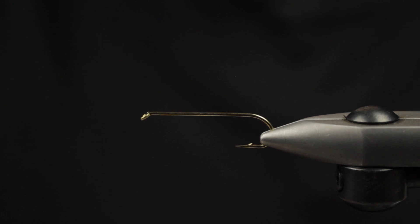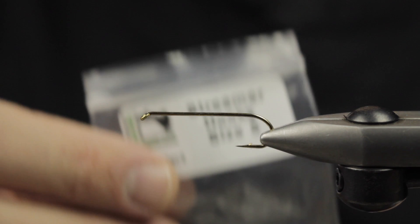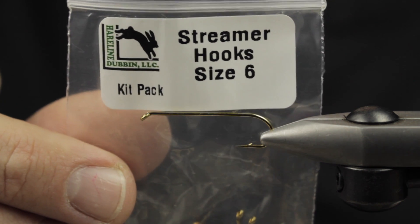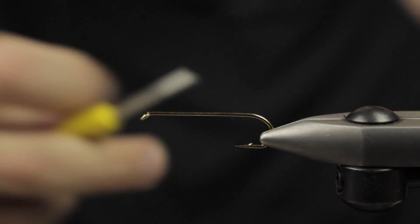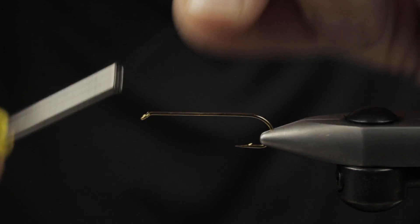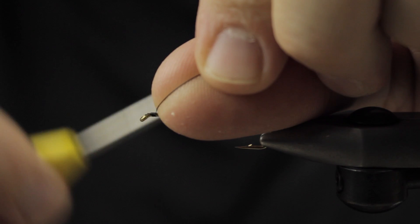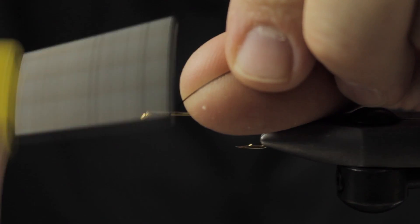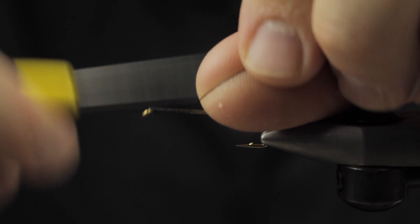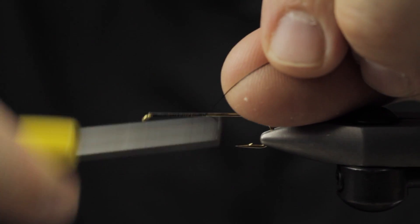Hey guys, Matt here from Loon Outdoors. Today we have a size 6 streamer hook in the vise and we're going to be tying a bucktail streamer. This is 8-0 thread in black. This is a really old-school streamer—if you haven't fished a lot of streamers, this one falls into that ultra-classic category.